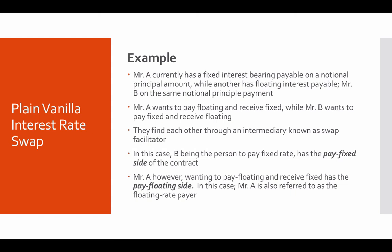Mr. B, being the person to pay the fixed rate, has the pay-fixed side of the contract. Mr. A, wanting to pay floating and receive fixed, has the pay-floating side — and in this case Mr. A is also referred to as the floating rate payer. That covers this lecture on the introduction to swaps.